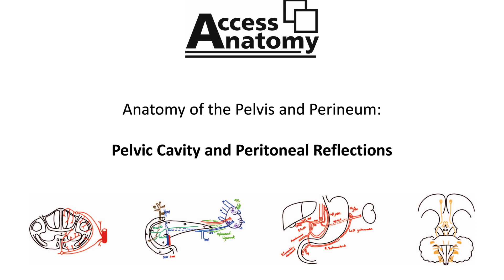The pelvic cavity is the inferior, funnel-shaped part of the abdominal pelvic cavity. It is bounded by bone, ligaments and muscles on its lateral, posterior and anterior sides, and has the pelvic floor — a sling-like arrangement of muscles — inferiorly. Although the abdominal and pelvic cavities are continuous, they can be separated into separate parts by the pelvic brim.